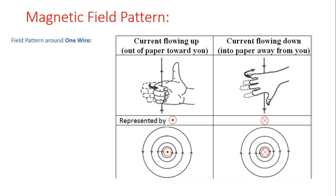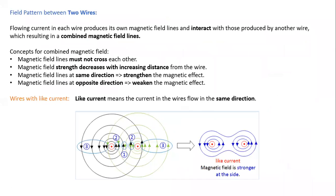Remember two main points: when current flows upward or out of the plane, the magnetic field is anticlockwise; when current flows downward into the plane, the magnetic field is clockwise. Now, when we talk about field patterns between two wires — if there are two wires and the current flowing through both is in the same direction, both wires will attract each other. The magnetic fields of both wires interact with each other, and due to this interaction between the wires, they attract.